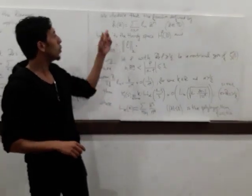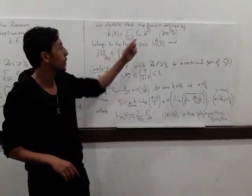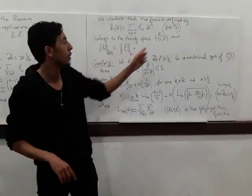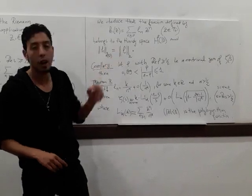Consequently, we deduce that the function H, defined as the power series involving the coefficients L, belongs to the classically Hardy spaces H power 2, and its norm equals the norm of 1 of L.